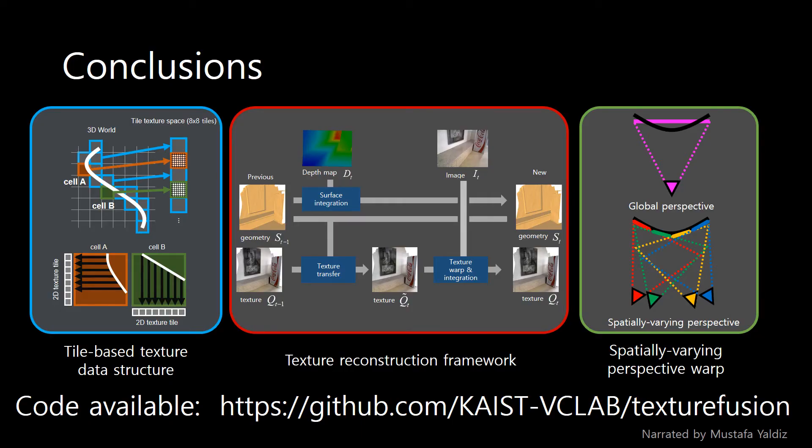In conclusion, we have presented a real-time texture reconstruction framework for online RGBD scanning. We also proposed a tile-based texture data structure for real-time texture acquisition. Finally, we introduce a spatially varying perspective warp for real-time texture alignment. Thank you for your attention. Code and paper are available online.